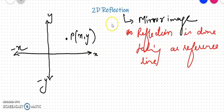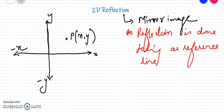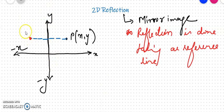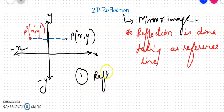When I try to do a reflection using a reference line, this is my original position P(X, Y). Now I want to reflect this about the Y-axis. From my first quadrant, I move on to my second quadrant as it is reflection about Y-axis. So my output is somewhere here: P'(X', Y').